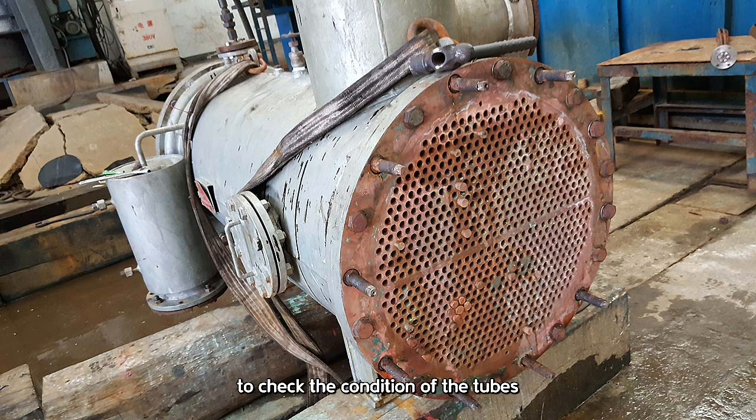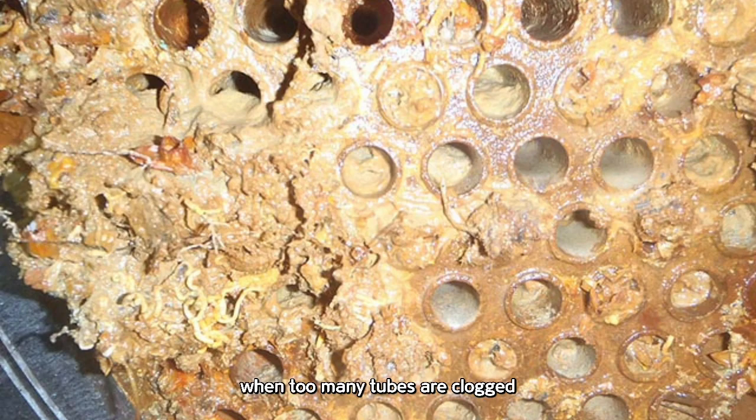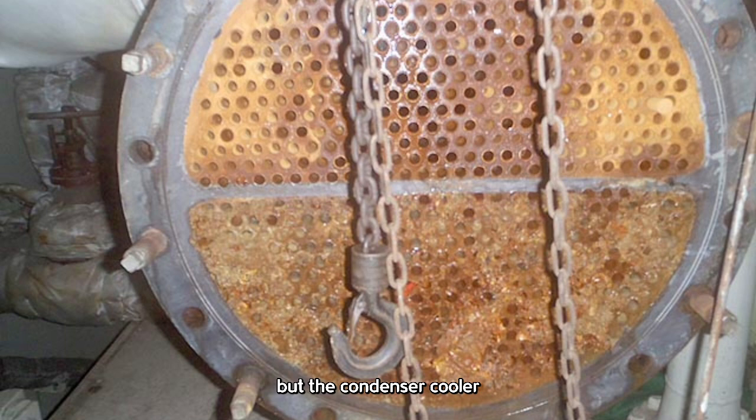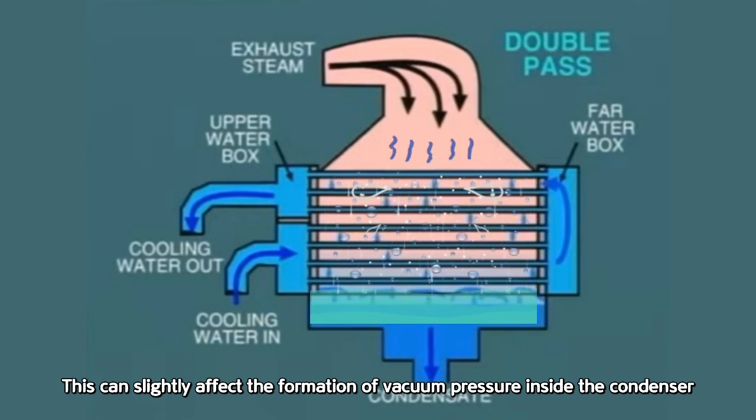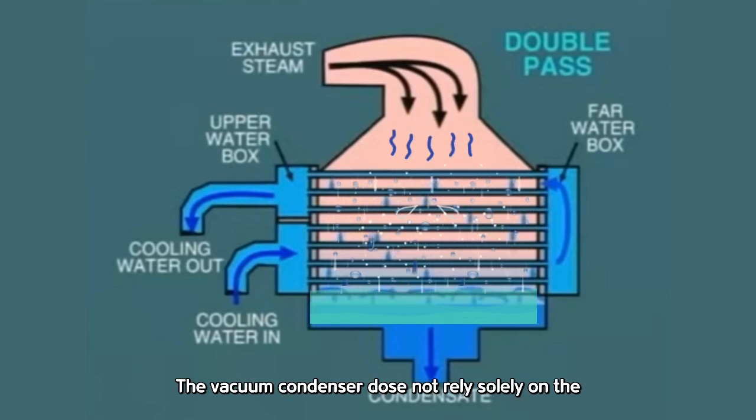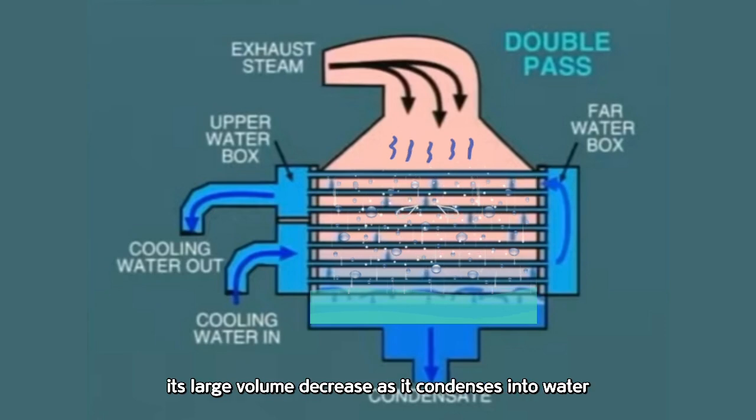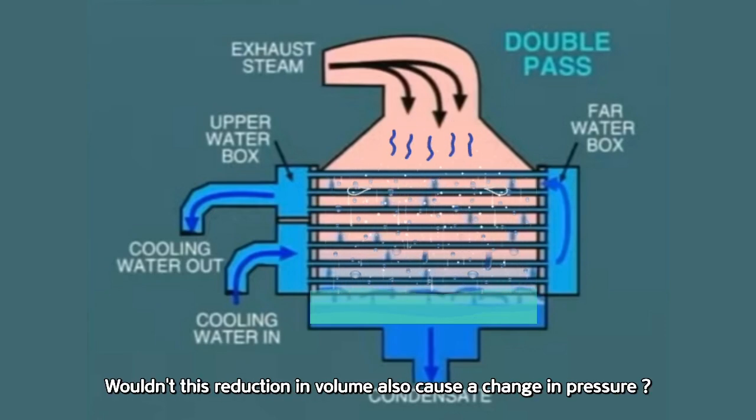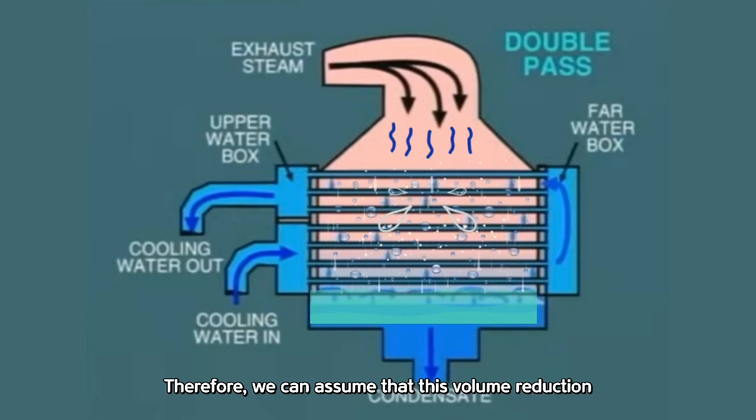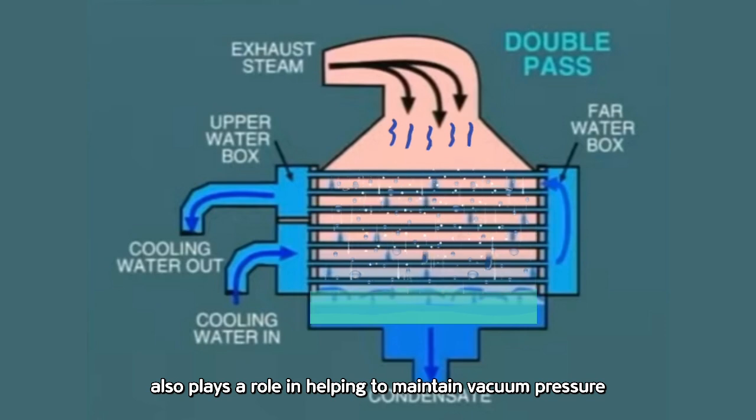Additionally, a pressure test is performed to check the condition of the tubes. If any leaking or damaged tubes are found, but the number is within an acceptable limit, instead of replacing them, they are simply plugged, as shown in the photo, and the condenser is put back into service. When too many tubes are clogged, not only does the cooling efficiency decrease, but the condenser cooler also fails to lower the internal temperature to the desired level. This can slightly affect the formation of vacuum pressure inside the condenser. The vacuum condenser does not rely solely on the performance of the steam ejector to maintain vacuum pressure. When high temperature steam is cooled, its large volume decreases as it condenses into water. Wouldn't this reduction in volume also cause a change in pressure? Therefore, we can assume that this volume reduction also plays a role in helping to maintain vacuum pressure.